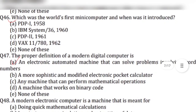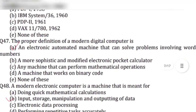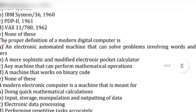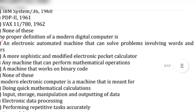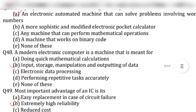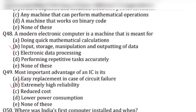Question 47: The proper definition of a modern digital computer is — answer is option A, an electronic automated machine that can solve problems involving words and numbers. Question 48: A modern electronic computer is a machine that is meant for — answer is option B, input, storage, manipulation and outputting of data.